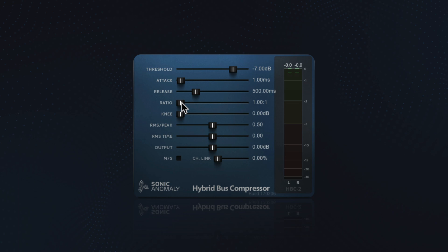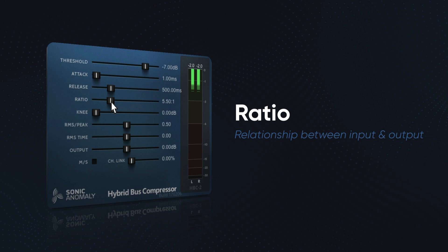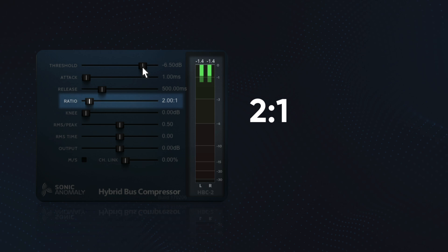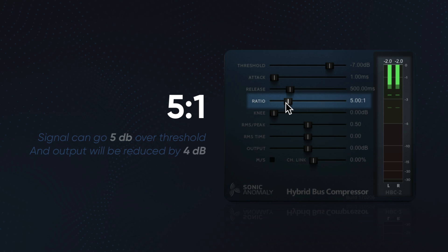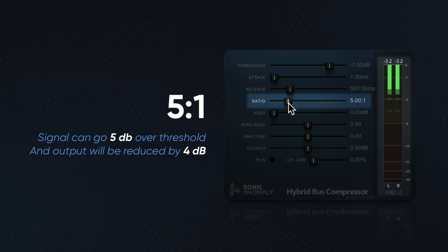So the threshold is the level where the compression activates. Now let's control how much compression is applied with the ratio. The ratio is the relationship between your input and output gain. If you have it set at 2 to 1, that means the signal can go 2 dB over the threshold and the output will be reduced by 1 dB, so the total signal only increases 1 dB. A 5 to 1 ratio means the signal can go 5 dB over the threshold and the output will be reduced by 4 dB, with the total signal only increasing 1 dB. This is really powerful because you can make an inconsistent performance manageable.